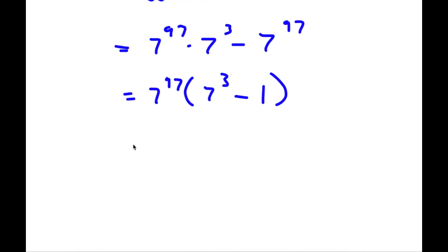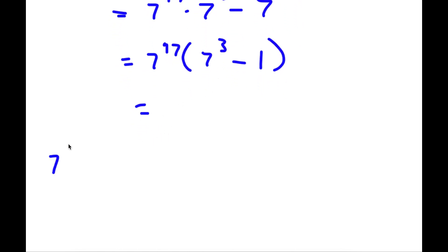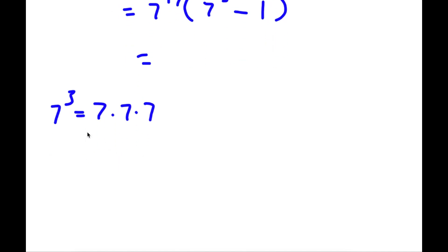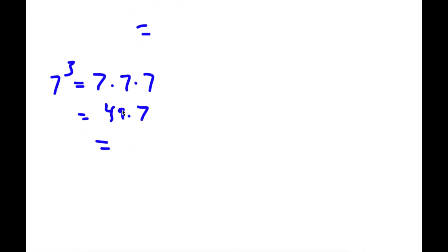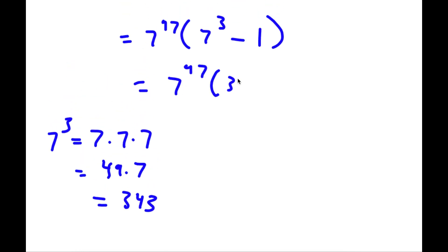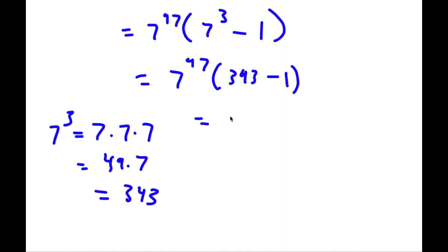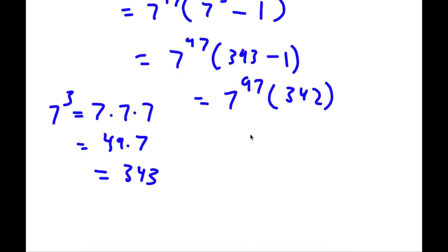Now let's solve for 7 to the power of 3. 7 to the power of 3 is equal to 7 times 7 times 7. Now 7 times 7 is 49, so now I have 49 times 7, and 49 times 7 is 343. So now I have 7 to the power of 97 times 343 minus 1. 343 minus 1 is 342, so I have 7 to the power of 97 times 342. And this is my final answer: 7 to the power of 97 times 342.